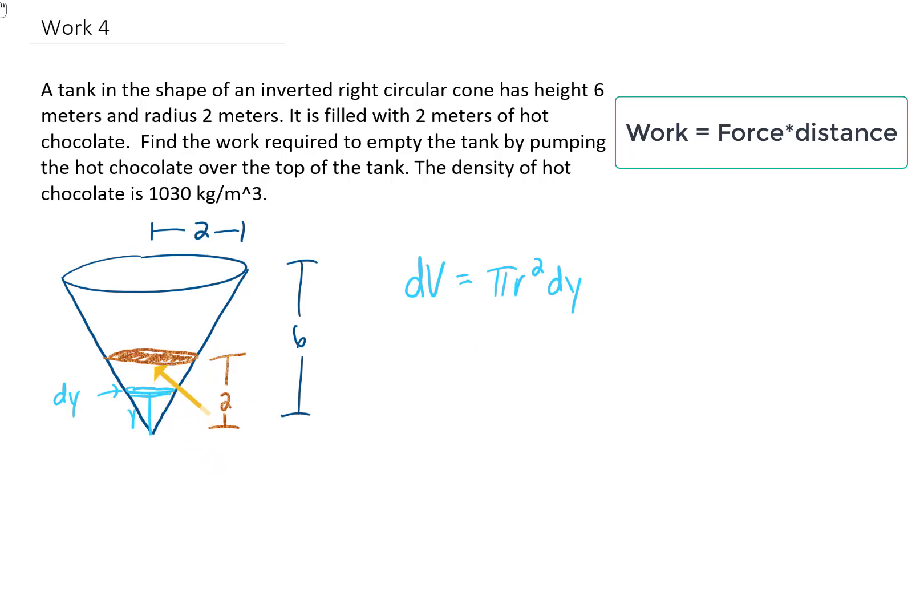So, for any height of this hot chocolate, we can see that the ratio 2/6 is gonna be proportional to the radius of that hot chocolate cone divided by the height of that hot chocolate cone.